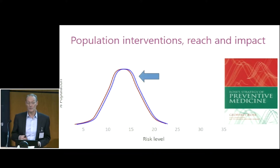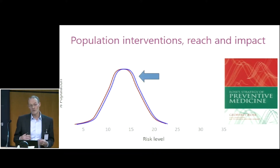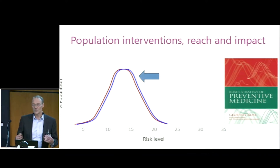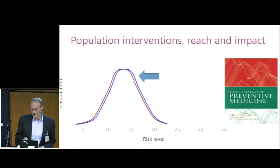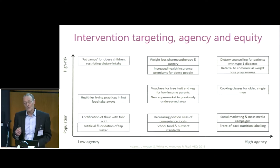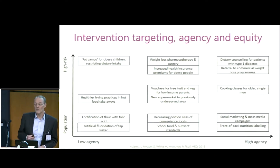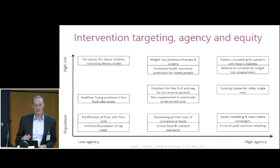The important thing about population interventions is that they have very wide reach. And because of that, even though they often have quite small effect sizes, they have big impact. For example, if you want to prevent strokes, reducing by a small amount the salt that we all eat can lead to a large reduction in the number of strokes, whereas intervening in people at high risk of stroke — treating hypertension in a smaller number of people — results in a smaller number of reduced strokes.